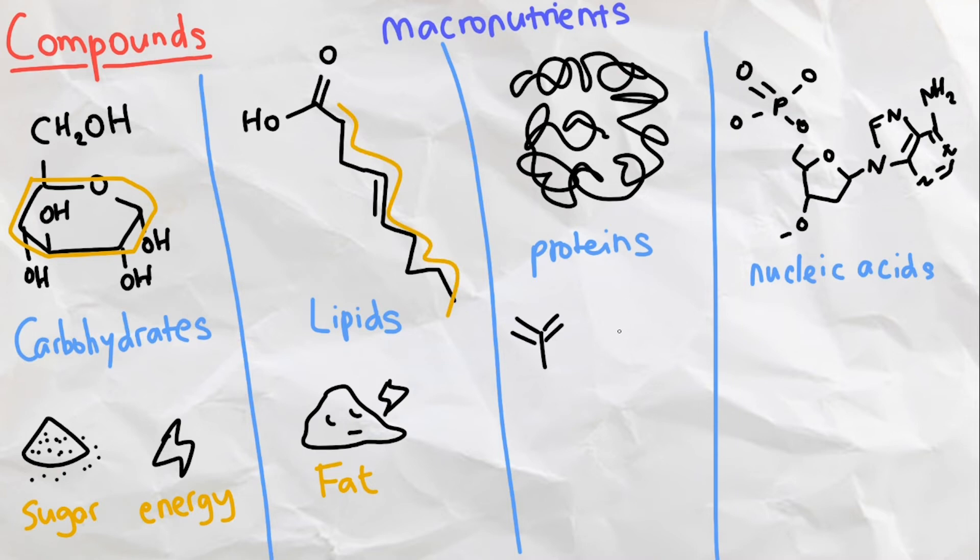Proteins are compounds like antibodies and enzymes that have many roles such as speeding up chemical reactions and building muscles, and they take on this complex shape with many different variations.